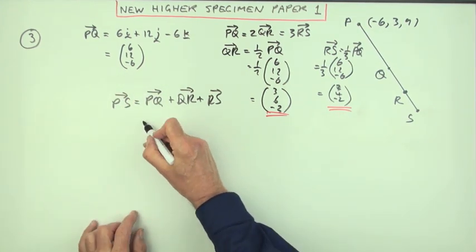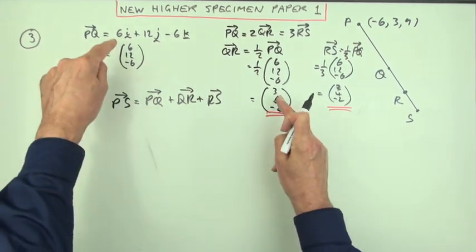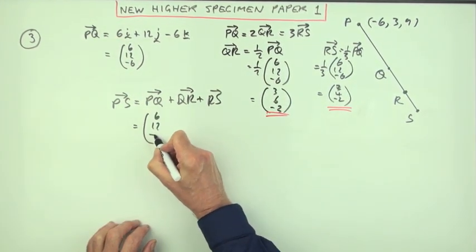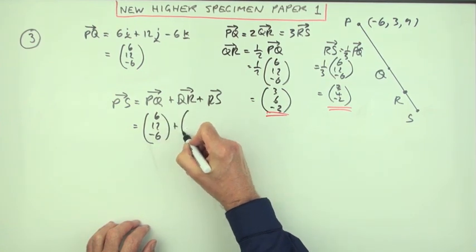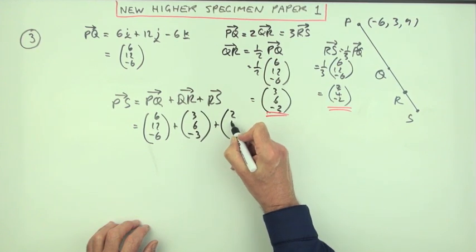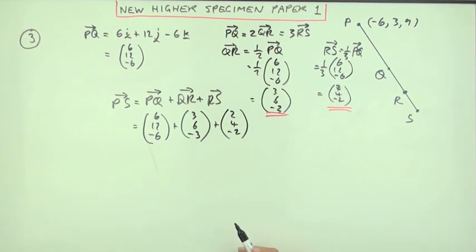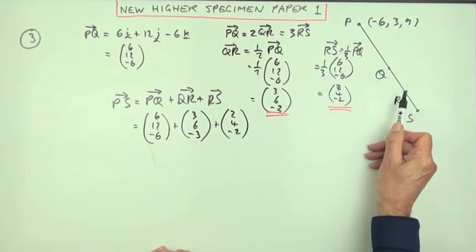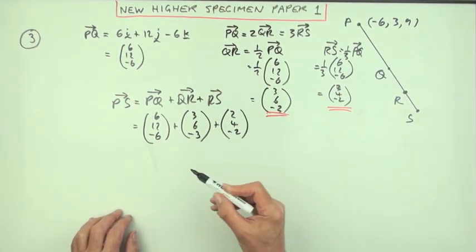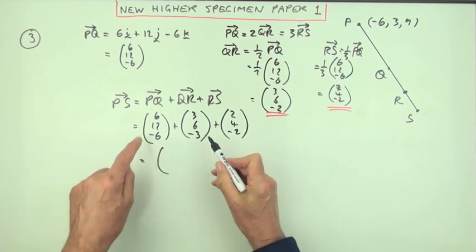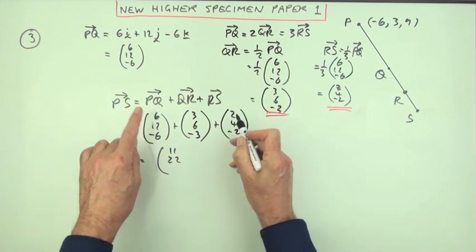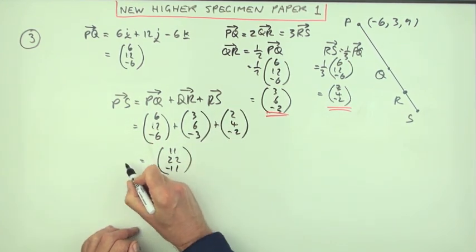It's PQ plus QR plus RS. And I think strictly speaking I wouldn't need to replicate these three down here, I should be able just to add them in one go just by inspection. I'll put it down anyway. So that was 6, 12, -6, plus 3, 6, -3, plus 2, 4, -2. Those would be the moves it would take, so the resultant move of those three displacements will be found by adding them together. 6 and 3 and 2 is 11, 12 and 6 and 4 is 22, and that must be just a negative of that: -11.